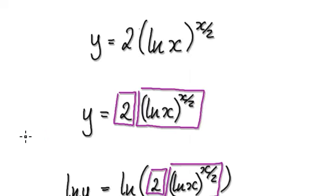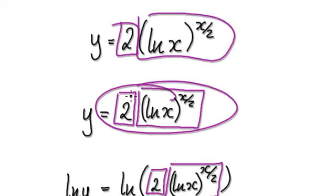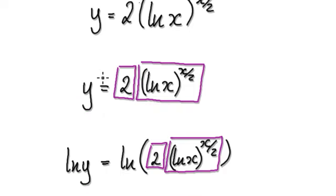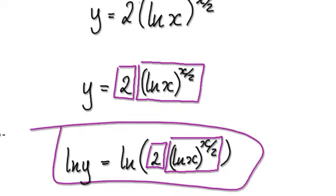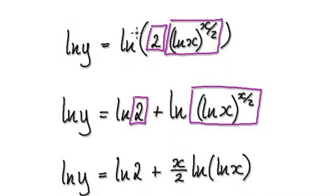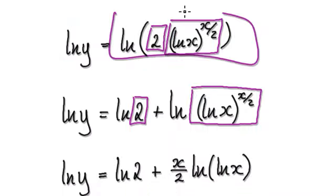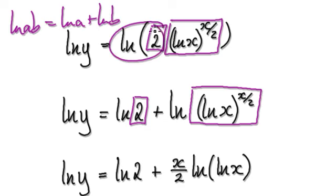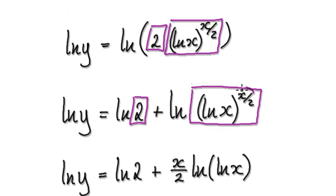Okay, so to do this, visualize the expression as one block multiplying with another block. From here, natural log both sides — that gives you this. Now use natural log of ab equals natural log of a plus natural log of b. So that's this bit here, and then that's this bit here.